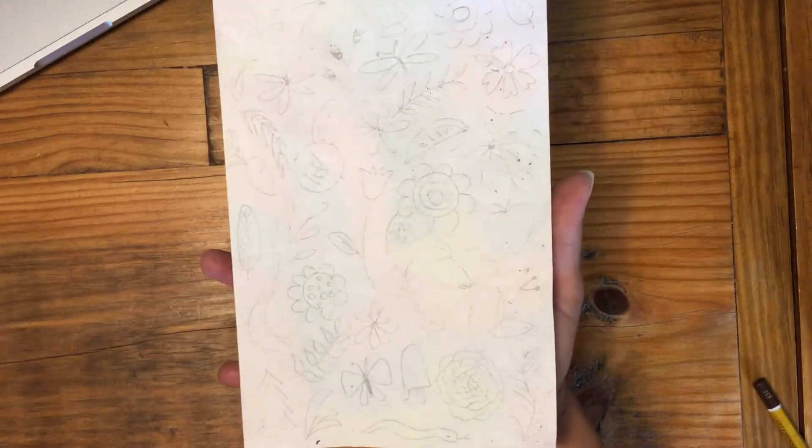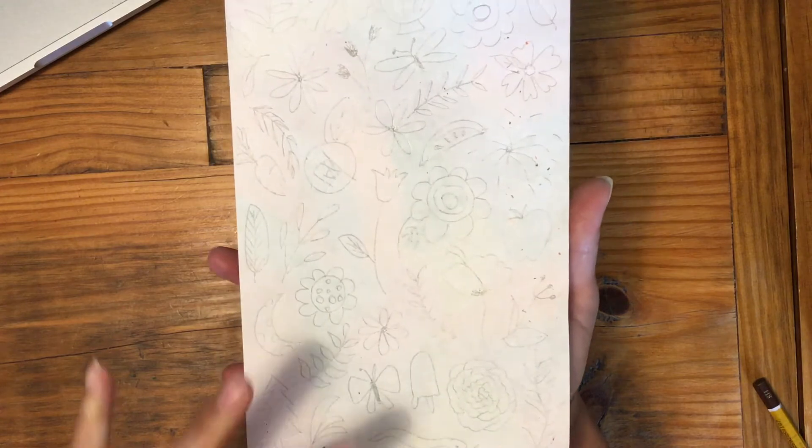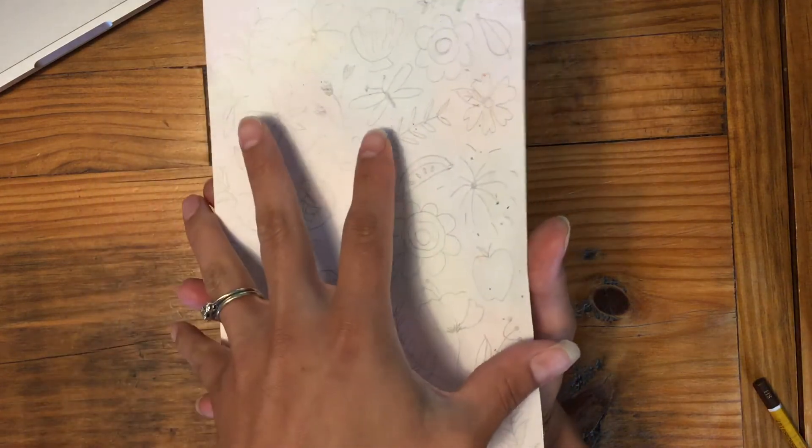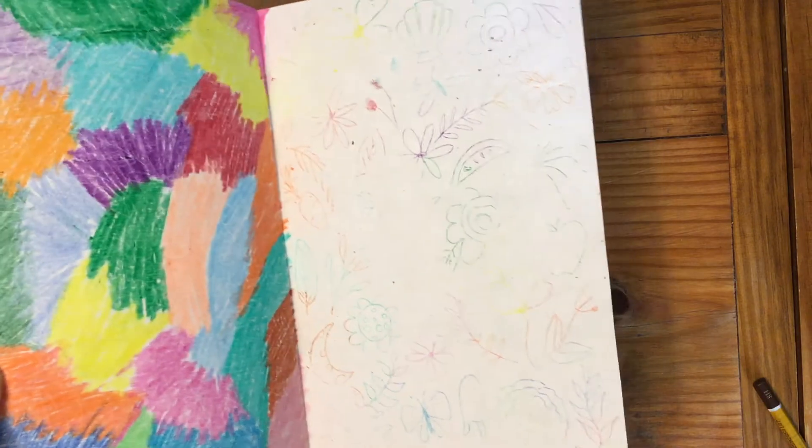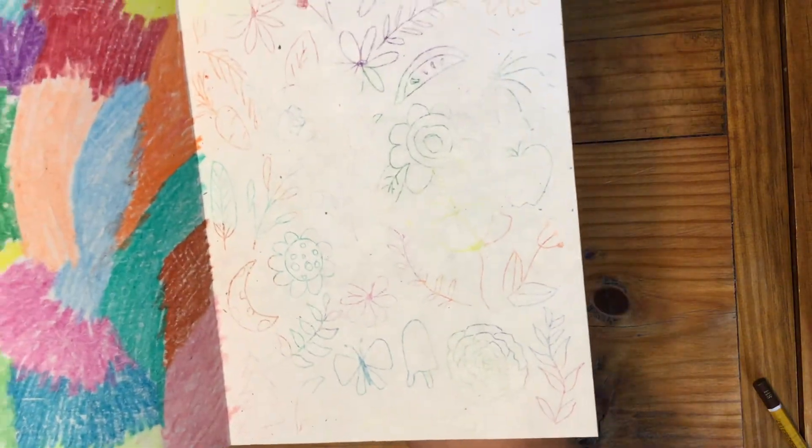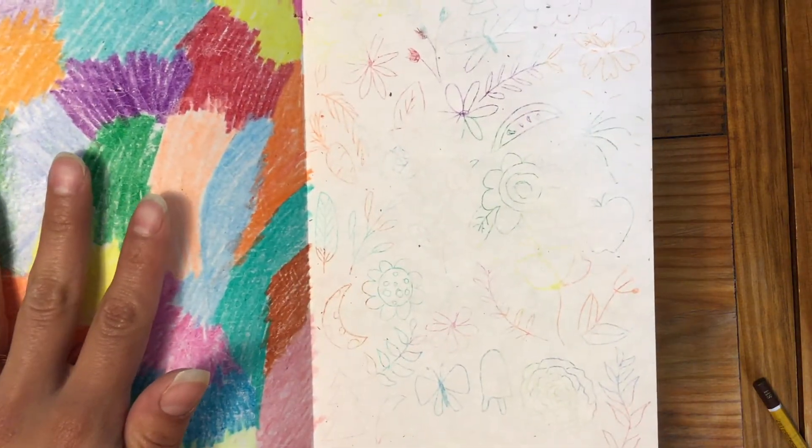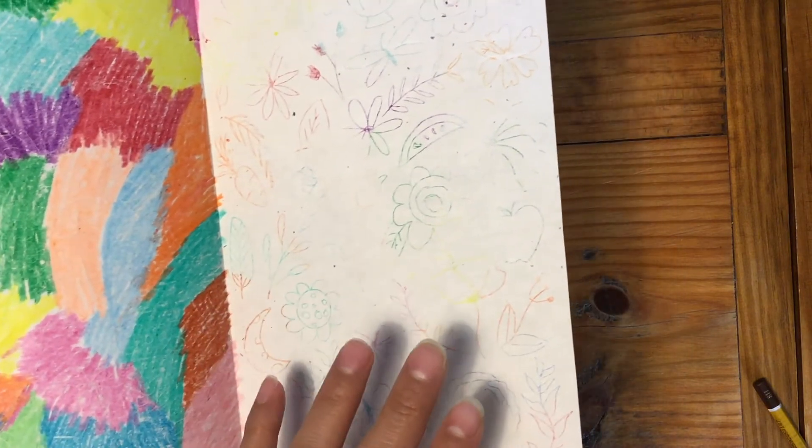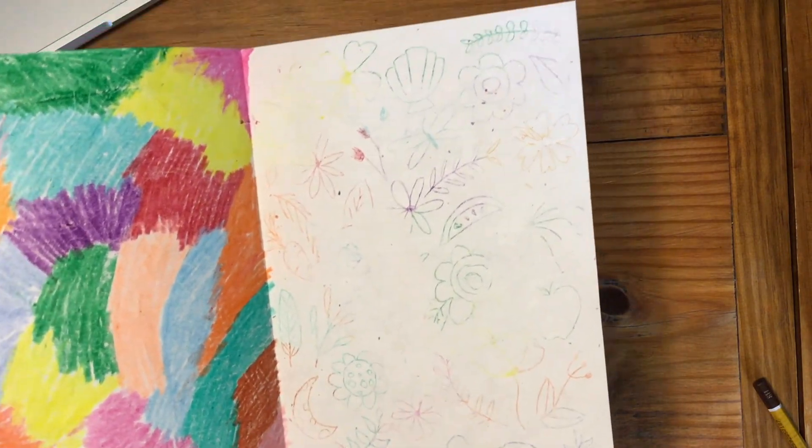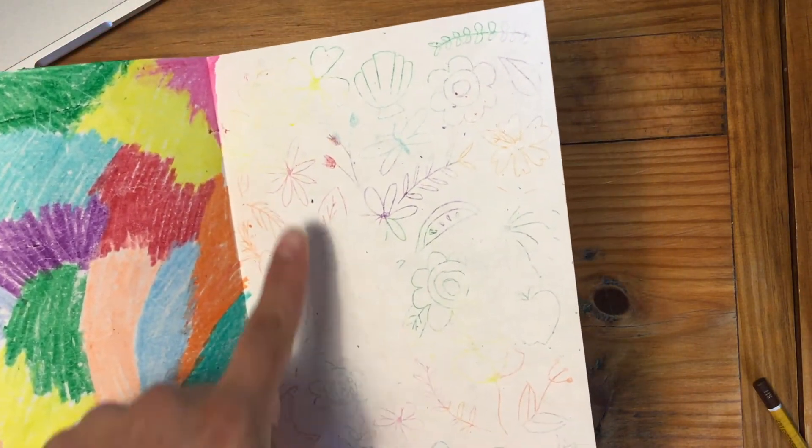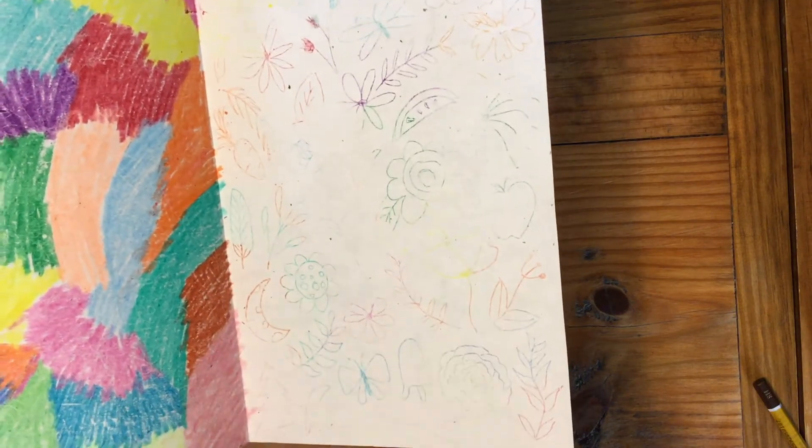Now I have completely filled my paper with all the doodles I want. When I open up my paper you can see that the color from this side has now transferred over. All of my doodle lines are rainbow.